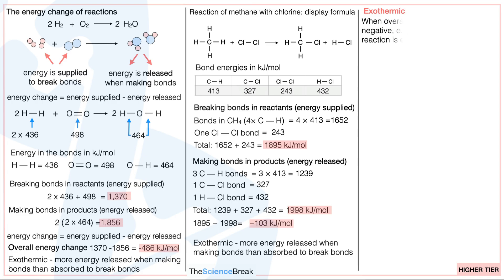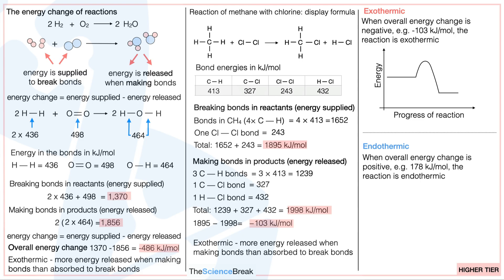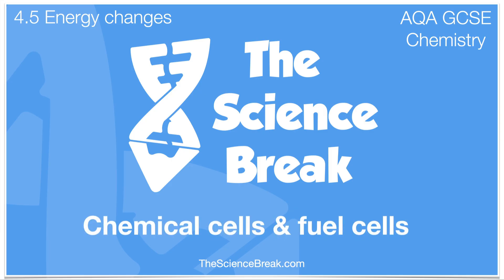In summary: for exothermic reactions the overall energy change is negative, for example −103 kJ/mol, and here is the reaction profile for an exothermic reaction. If we have an endothermic reaction the overall energy change is positive, for example +178 kJ/mol, and here's the reaction profile for an endothermic reaction. That's it for energy change of reactions. We now move on to chemical cells and fuel cells, which is for triple science only.